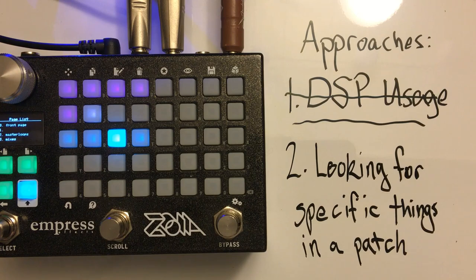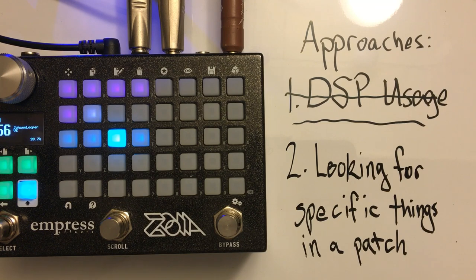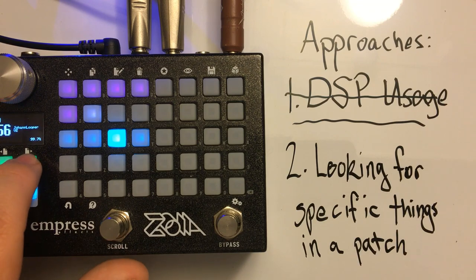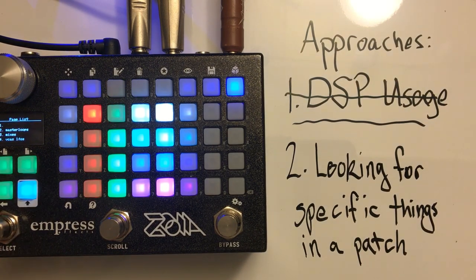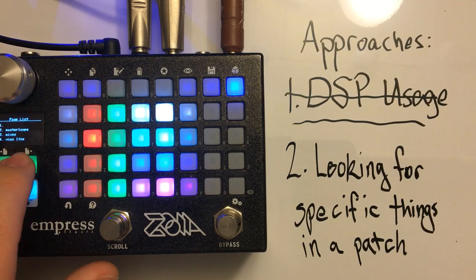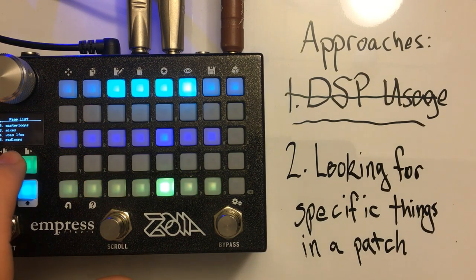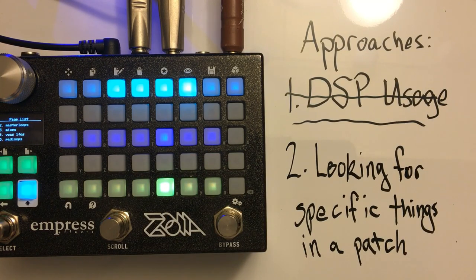Sometimes you just have to start digging around in a patch looking for specific things. If something's timed, there are probably LFOs or sequencers. The more you work with Zoia, the more these things pop out at you as you scroll through a patch. Loopers always have a certain configuration of lights — really easy to identify. Larger modules tend to be things like effects blocks.